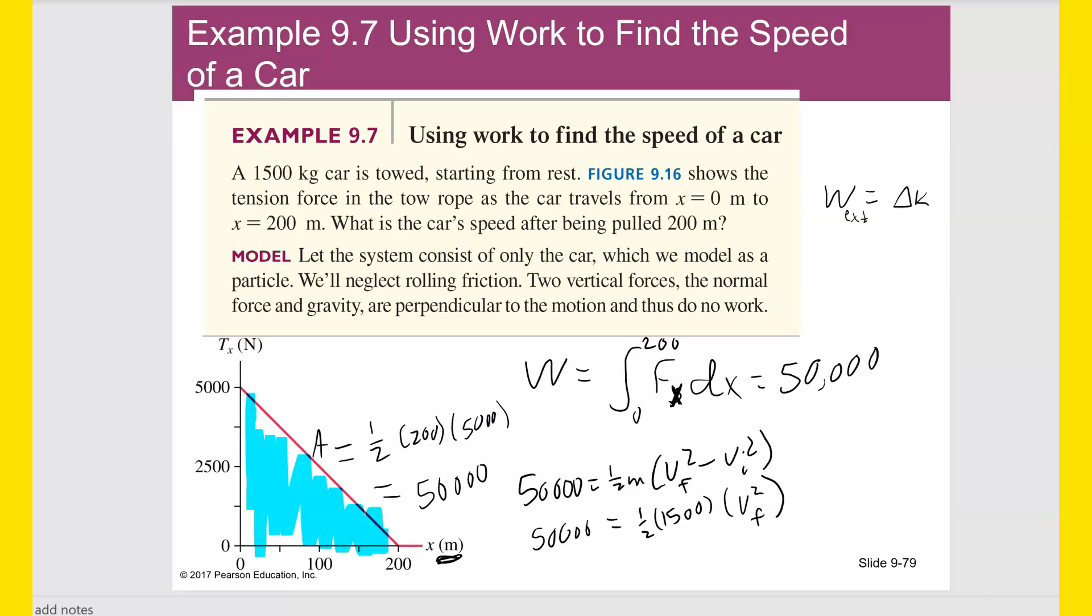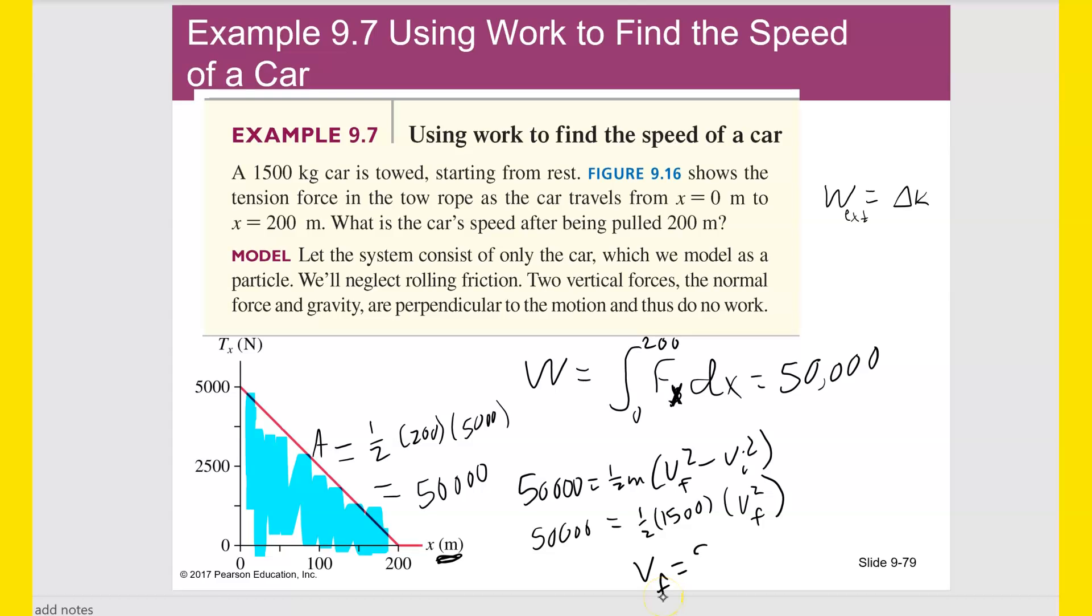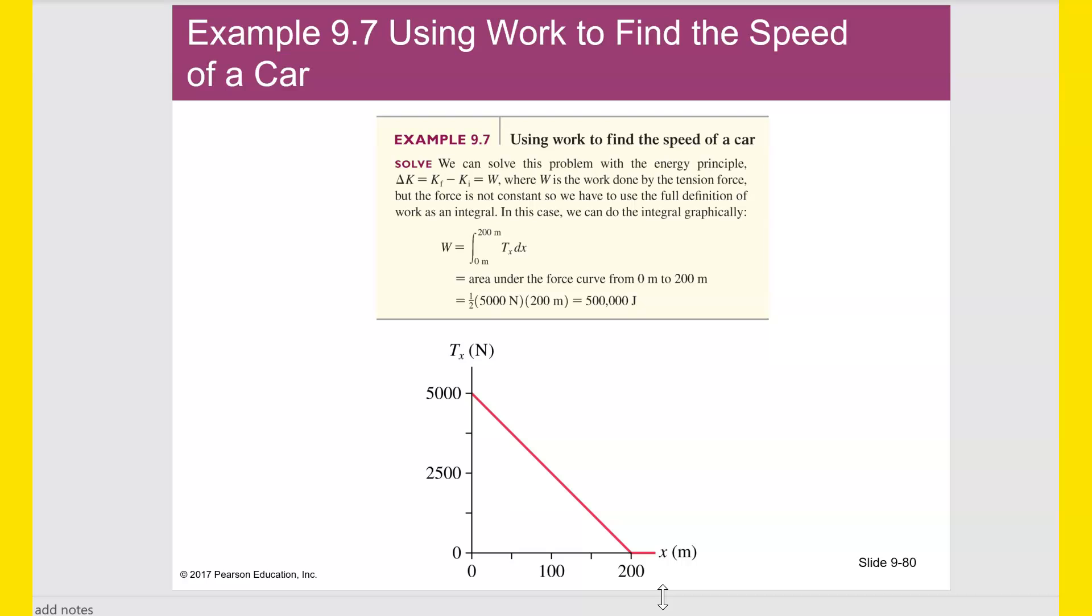Let's do it, 100,000 divided by 1,500 equals square root is 8.16 meters per second. Okay.